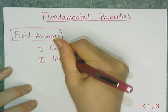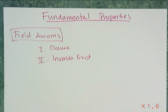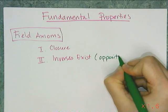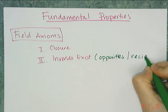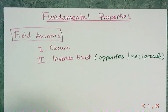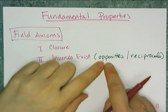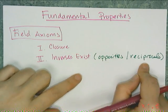The second property is that inverses exist. If you need to put one in a problem, you can. The inverses are quite literally the opposites — additive inverses are opposites, and reciprocals are the multiplicative inverses. We're going to use those to solve equations, because sometimes I want to zero out a number on one side, or turn something into a 1 by multiplying by the reciprocal. That's the field axiom that inverses exist.